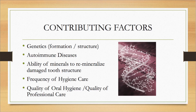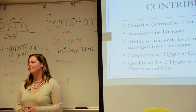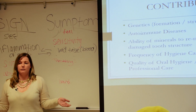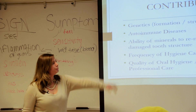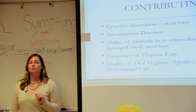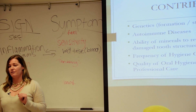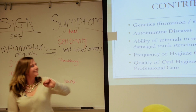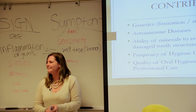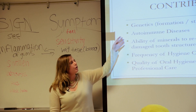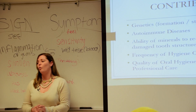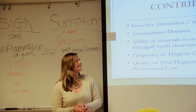Contributing factors include genetics. I've seen a husband who never brushes or flosses with amazing teeth and no cavities, while his wife who always brushes and flosses gets cavities all the time — that's genetics. People with autoimmune diseases like Crohn's disease can also have horrible teeth as a result.